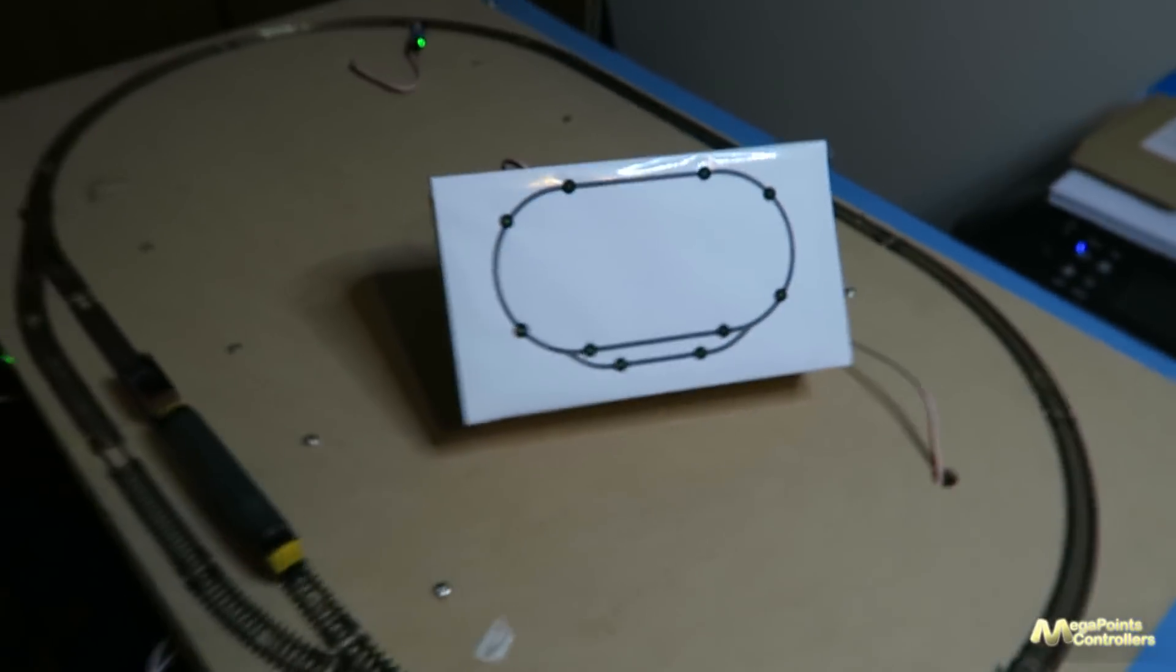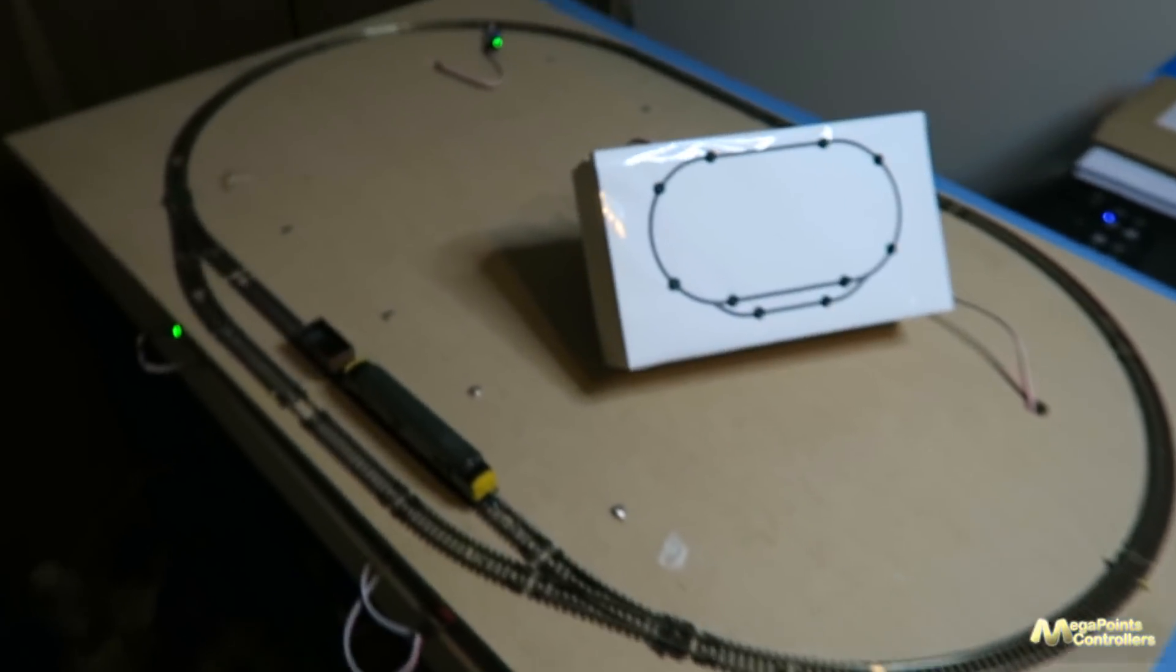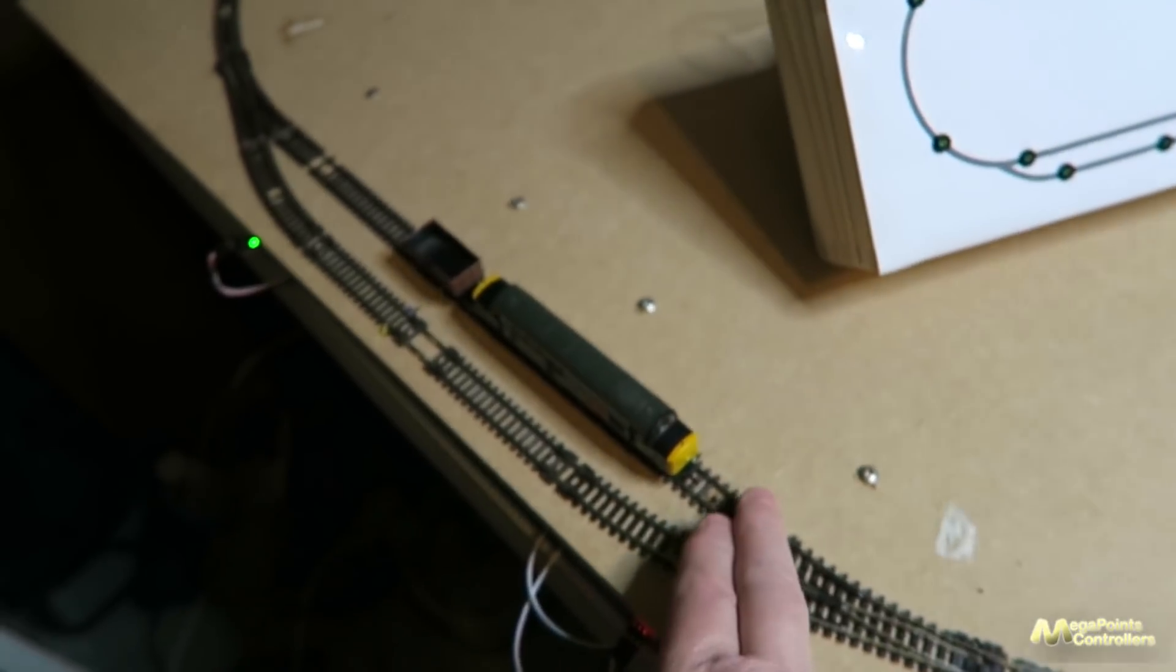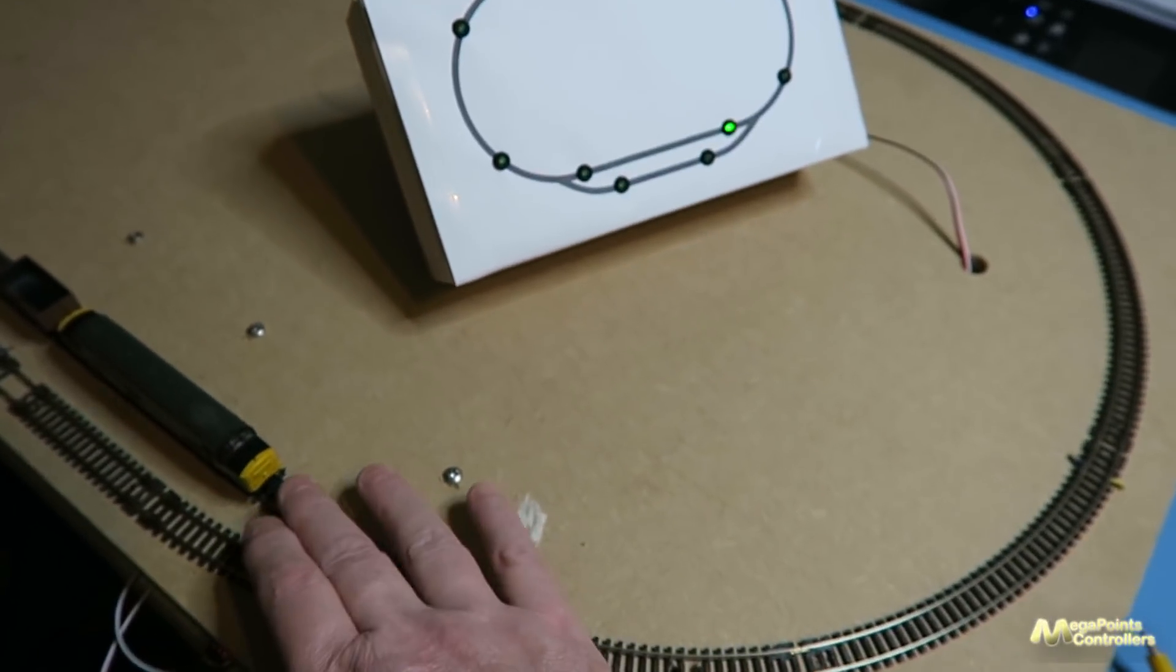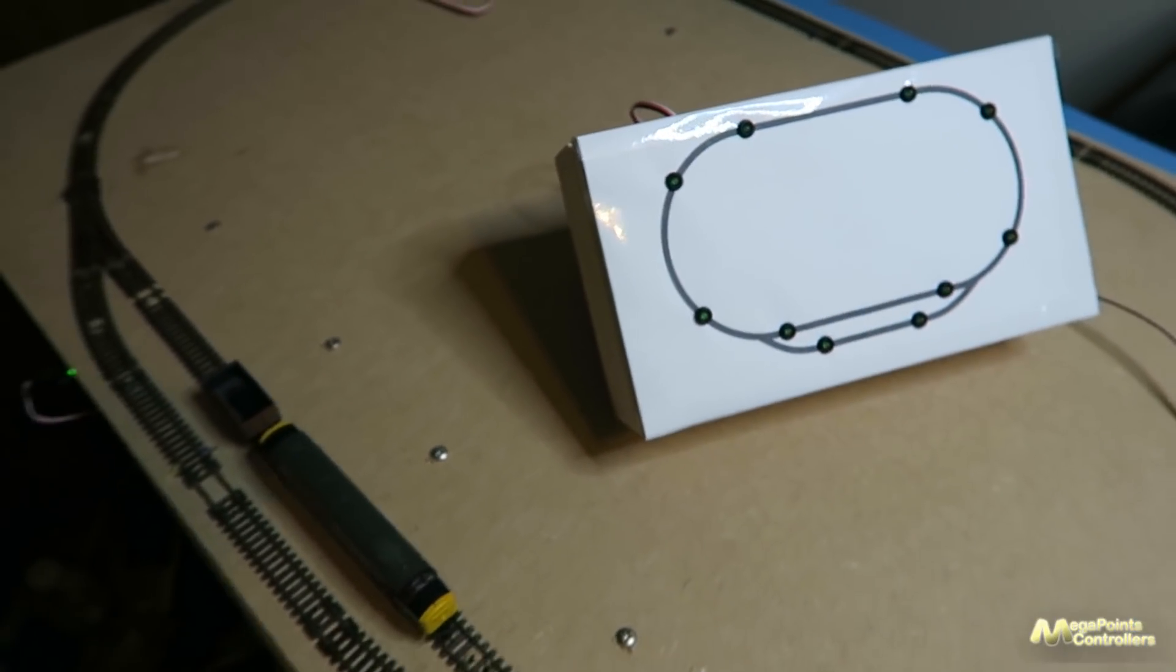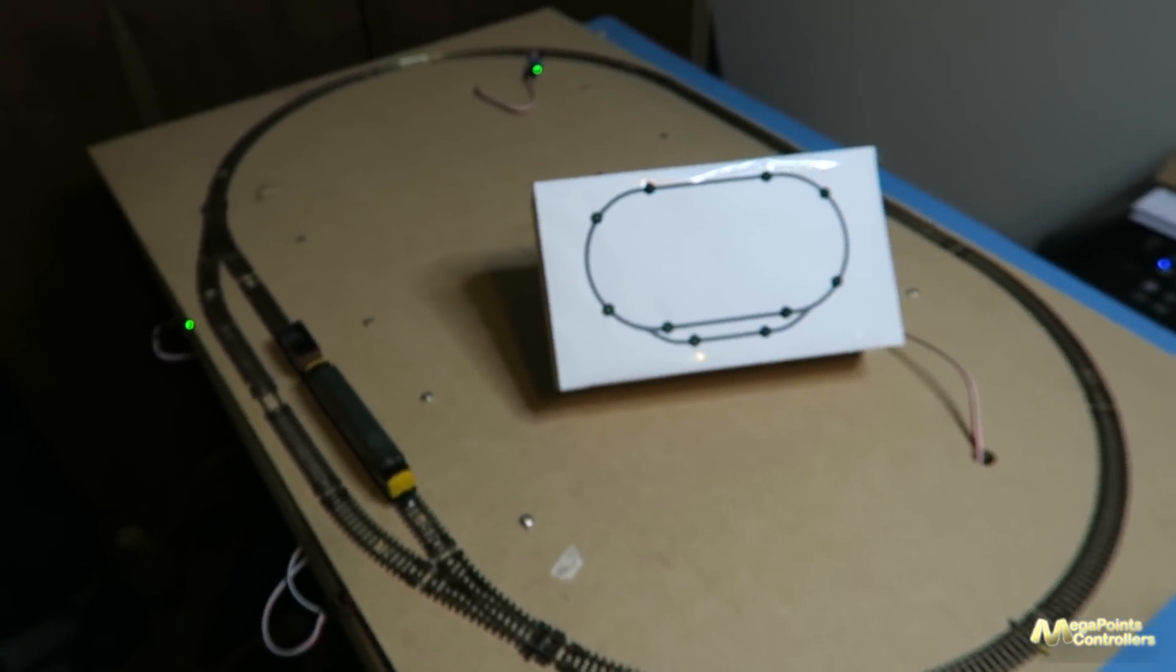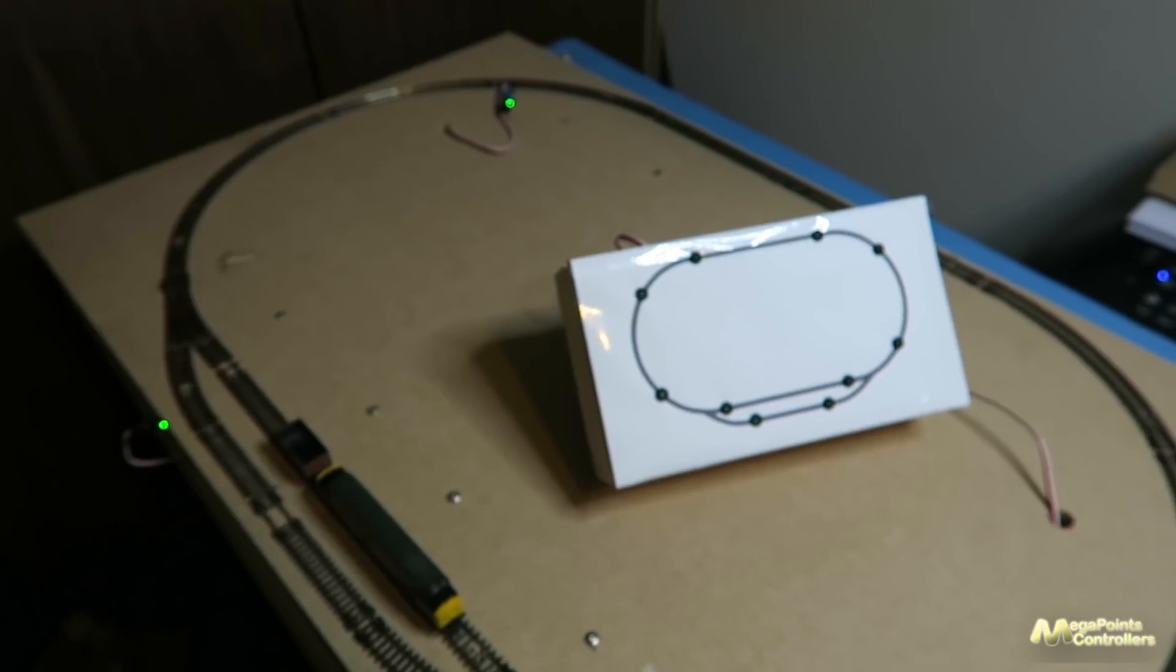So if I operate my layout. Now this is analog detection but I am running DCC here. So as I move the loco forwards you should see number one or number 12 light up. Let's see what happens. So what I'll do I'll just remount the camera and you can see it working.